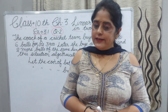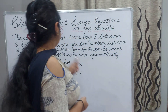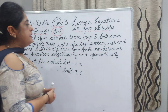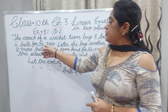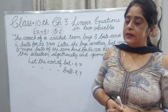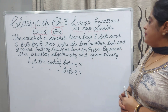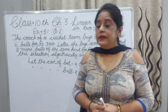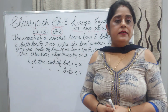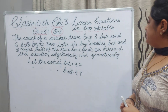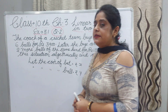First of all, I will read the statement — listen carefully. The coach of a cricket team buys 3 bats and 6 balls for Rs. 3,900. Later she buys another bat and 2 more balls of the same kind for Rs. 1,300. Represent the situation algebraically and geometrically.